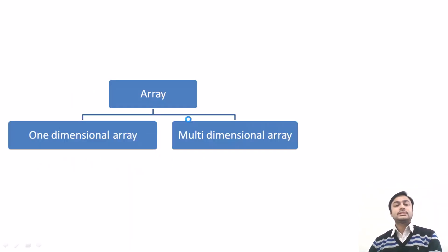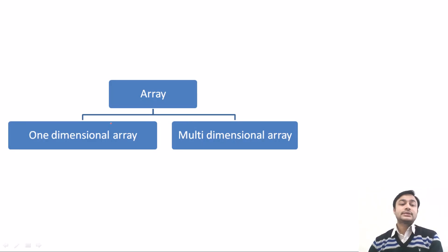Let us discuss what are the different types of array. The first type is one-dimensional. The second type is multi-dimensional.